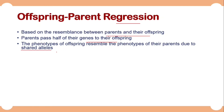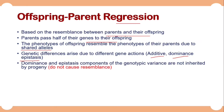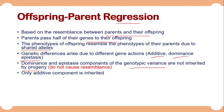Genetic differences arise due to different gene action, which are additive, dominance, and epistatic gene action. It is very important to know that dominance and epistatic components of genetic variance are not inherited by progeny — they do not cause resemblance between parents and offspring. It is the additive component of genetic variance that is inherited by the progeny. So similarities between offspring and their parents arise due to additive genetic components.